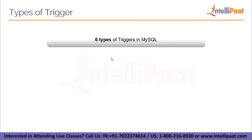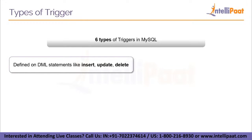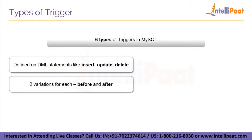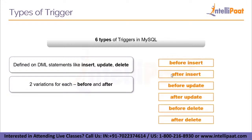Within row-level triggers, there are six types of triggers in MySQL. These are defined on DML statements — INSERT, UPDATE, and DELETE — and there are two variations for each: BEFORE and AFTER. That makes six in total: BEFORE INSERT, AFTER INSERT, BEFORE UPDATE, AFTER UPDATE, BEFORE DELETE, and AFTER DELETE. The BEFORE variation fires before the execution of the DML statement, and the AFTER variation fires after the execution of the statement, as the name suggests.